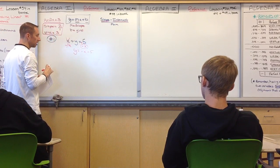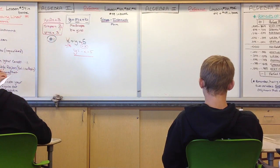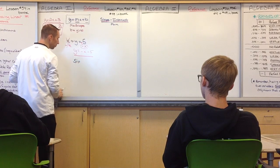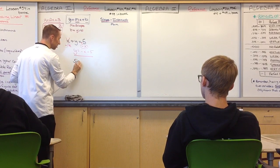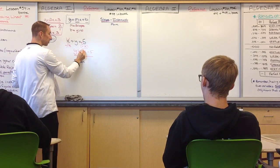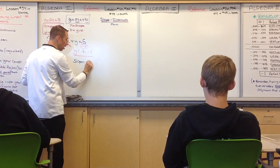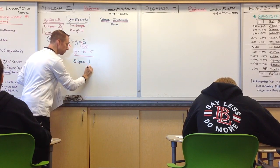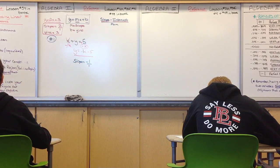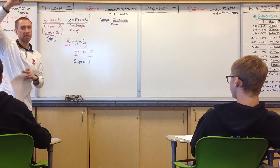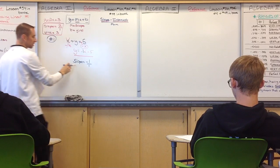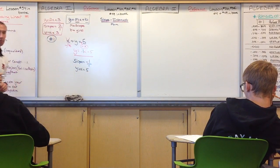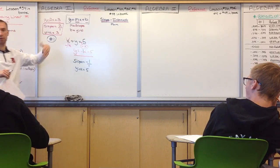We can't combine the negative x and the 5 — they're different. Now, am I in y equals mx plus b form? I am. What is my slope? Whatever is in front of that x, which is a negative 1. My slope is negative 1 over 1. Remember, slope is always a fraction — it's the rise over run. So my slope is negative 1 over 1. What's my y-intercept? Positive 5. Make sure you take the sign with whatever is in front of the x and take the sign with the constant.